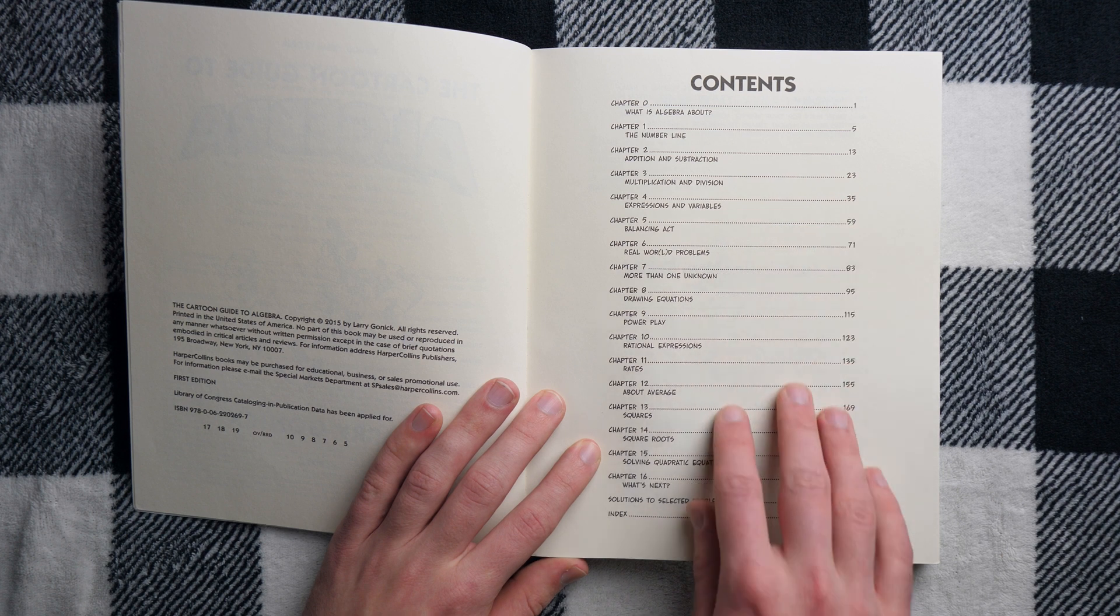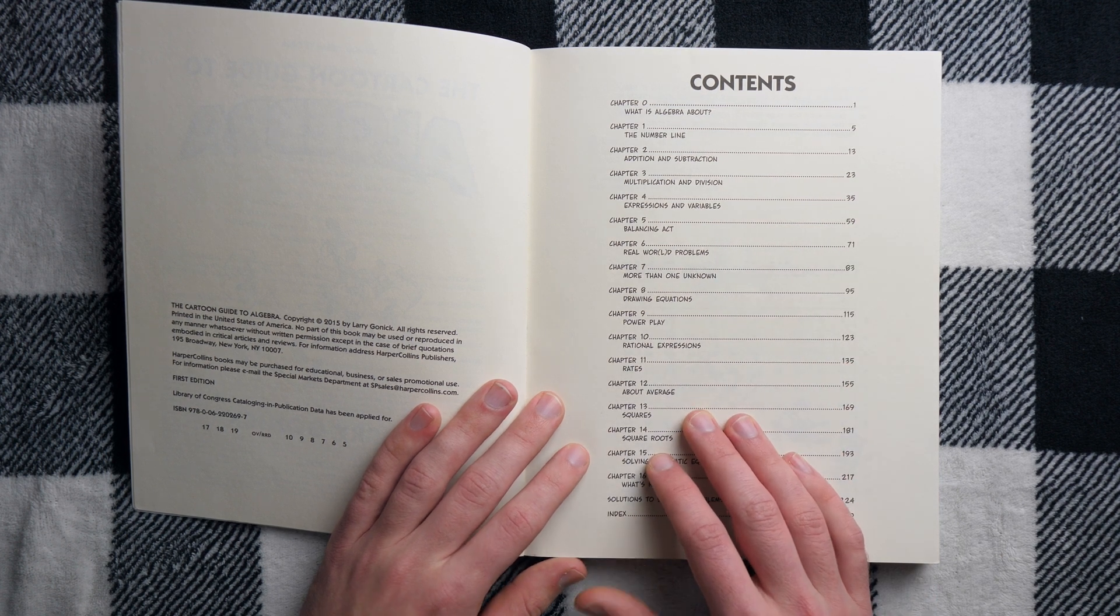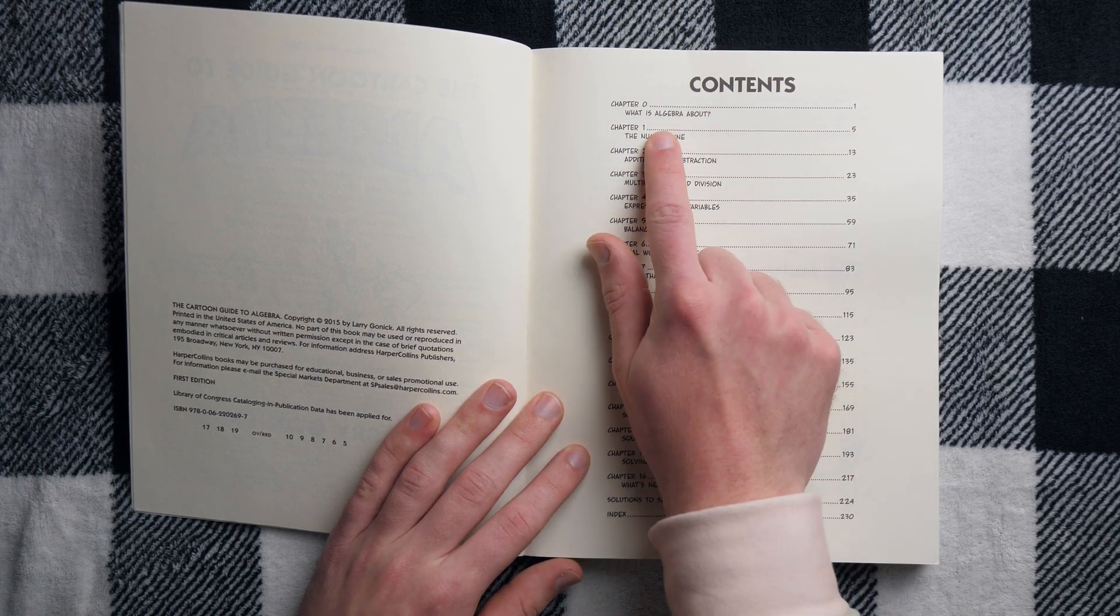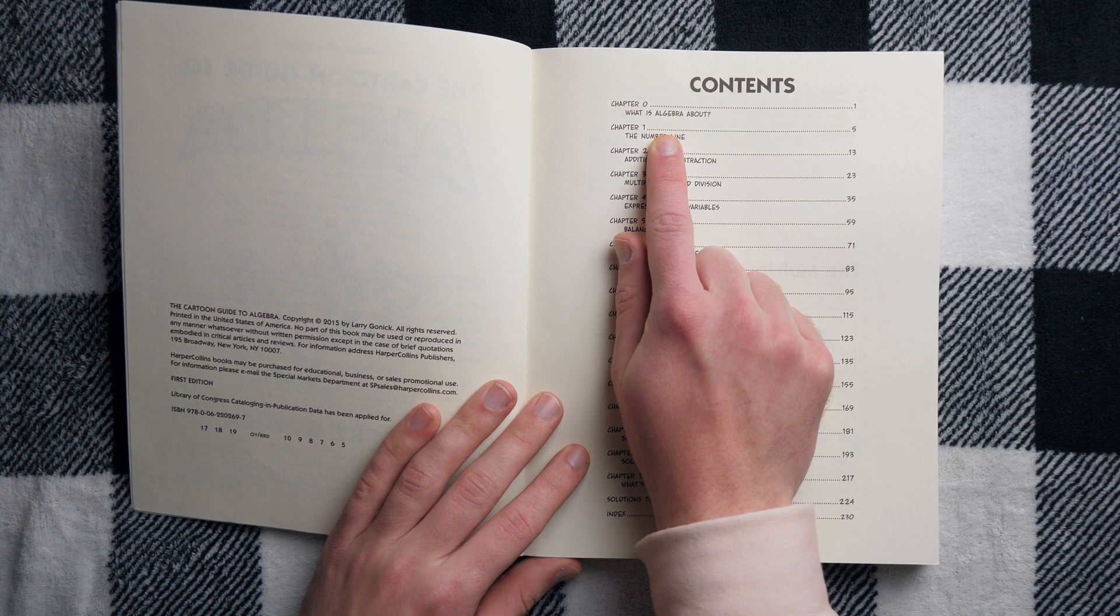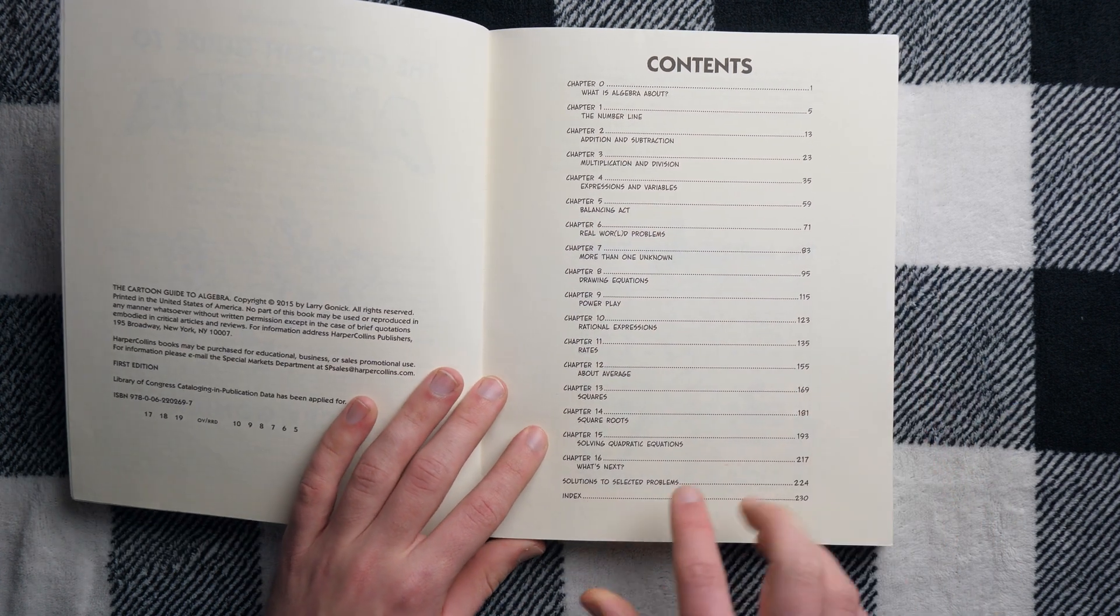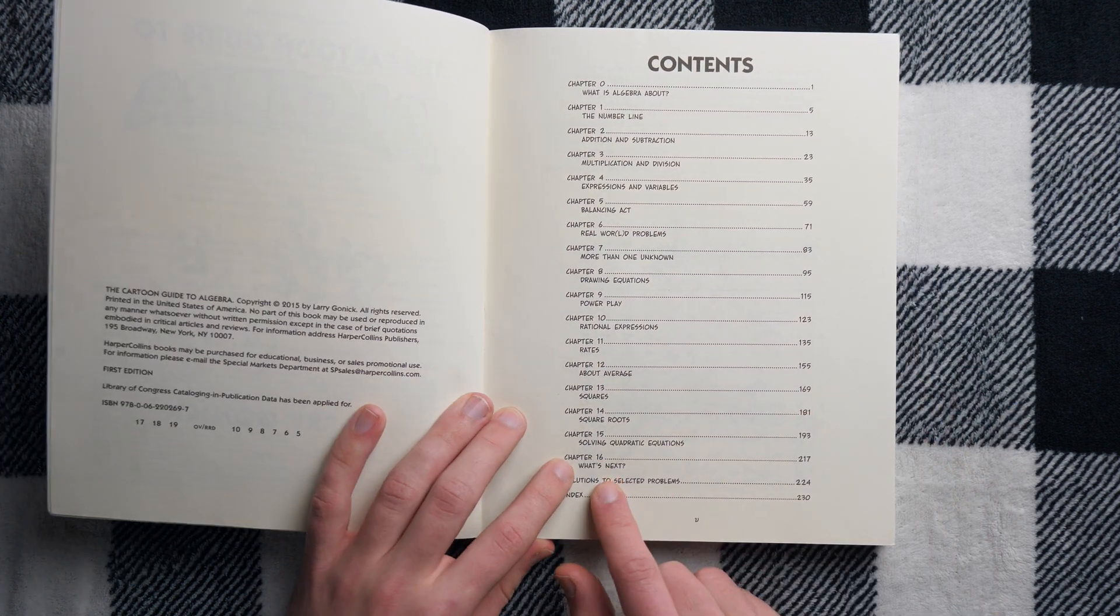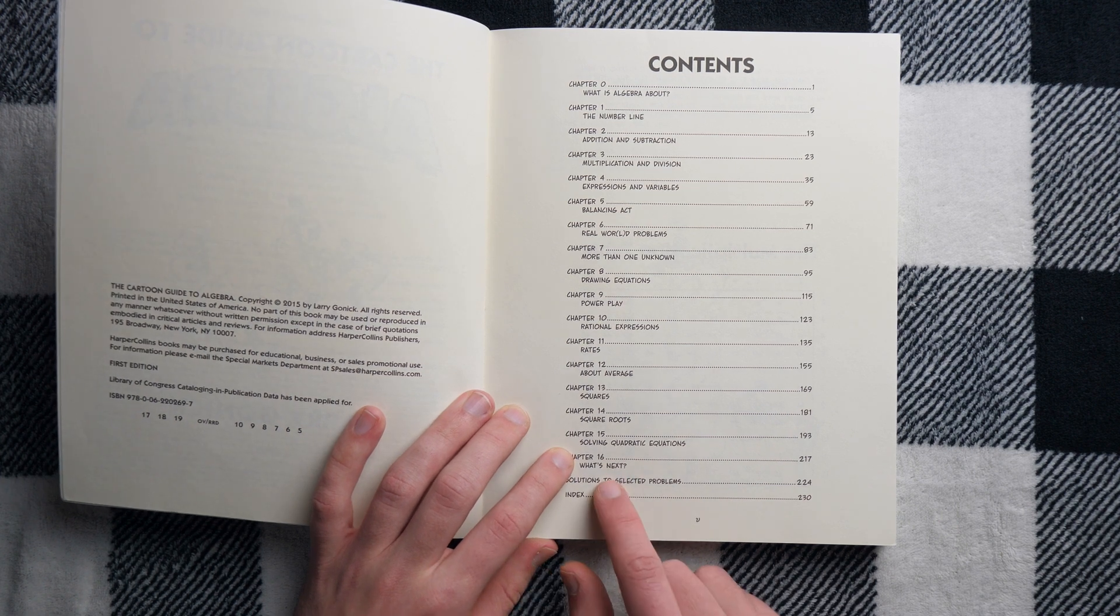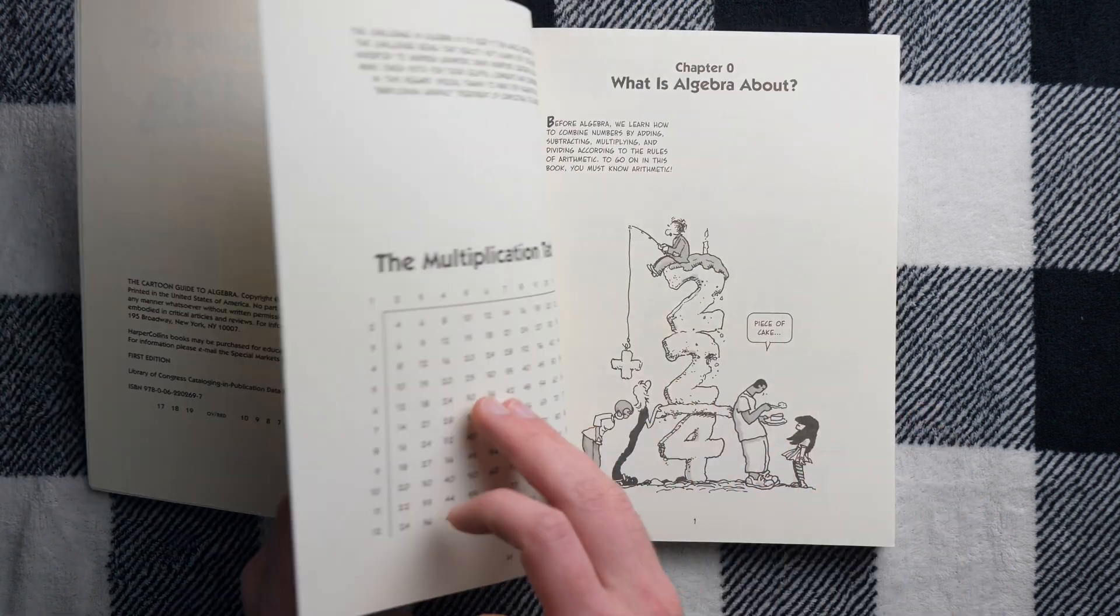This one I picked up at my local Barnes and Noble. It is the first edition. I wonder how many editions these cartoon guides go through. It'd be pretty funny if it was like other textbooks. Here you've got all of your contents, chapter numbers, and their titles. We start with what is algebra about and go all the way up through solving quadratic equations and then a great final chapter on what's next.